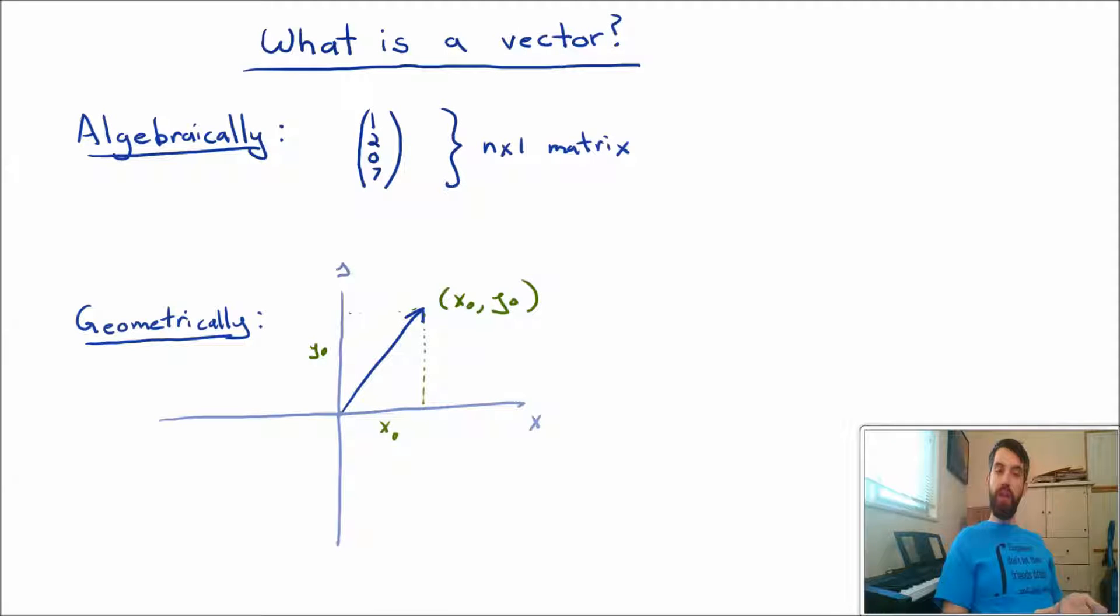But then what is this coordinate x0, y0? It's just a list of numbers. This coordinate x0, y0 is the same thing as that algebraic vector. I've just written it horizontally as opposed to vertically. So in other words, a vector, which is given as a list, say x0, y0, is thought of geometrically as this thing that starts at the origin and goes out and has the tip of its arrow at the coordinate x0, y0.